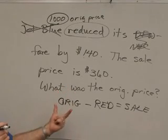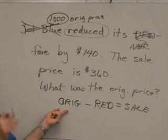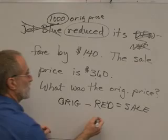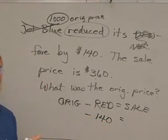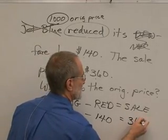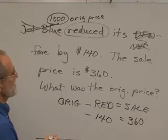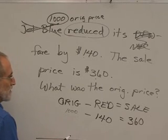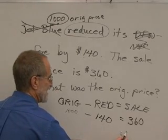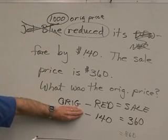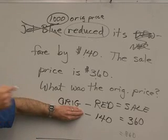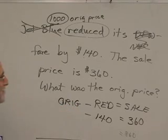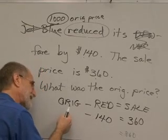Let's fill in what they gave us. Did they give us the original price? No. Did they give us the reduction? Yes — that was $140. Did they give us the sale price? Yes — that was $360. Now, if this were $1,000 and I subtracted $140, I'd get $860. If I knew the $860 and the $140, how would I get the $1,000? I'd add those two together. So that's the same relationship here — if I know the sale price and the reduction, I add them together to get the original price.